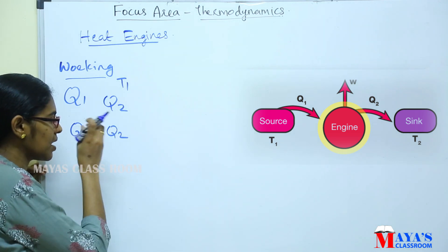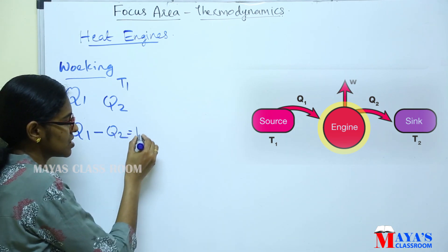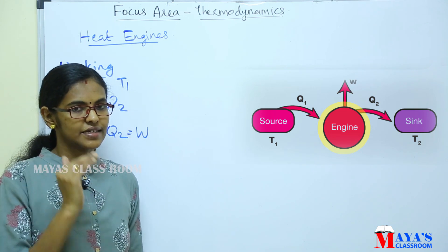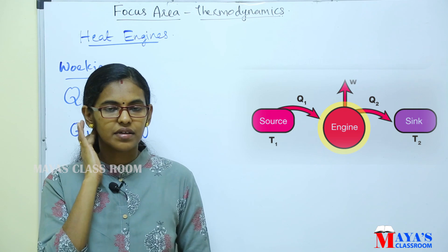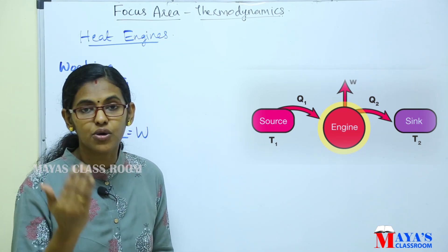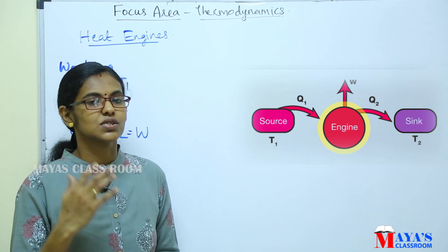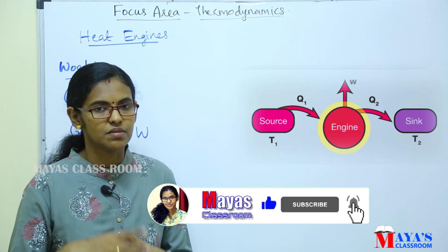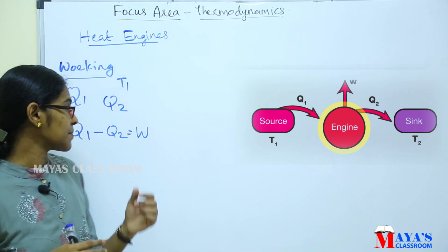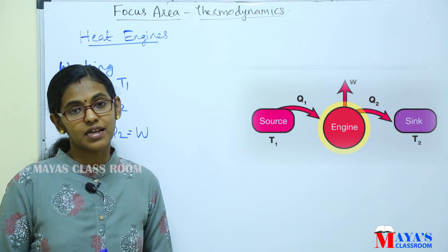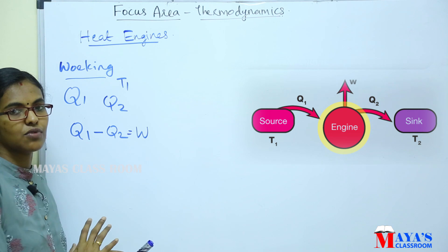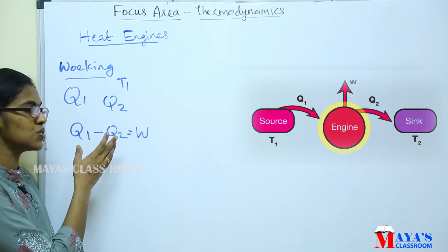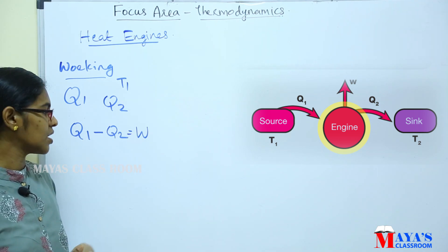When the source is at temperature T1, the net work output is Q1 minus Q2. This is the working of the heat engine. The working substance absorbs a quantity of heat Q1 from the source at high temperature T1, undergoes a cyclic process, and releases the amount of heat Q2 to the low temperature sink. The net change — Q1 minus Q2 — is converted into work. That is the heat engine.